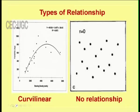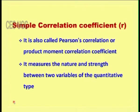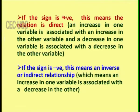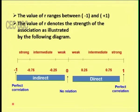Now let us calculate how to find the strength of the correlation. The simple correlation coefficient is also called Pearson's correlation or the product moment correlation. It measures the nature and strength between two quantitative variables. The sign of r denotes the nature of association and the value denotes the strength. A positive sign means a direct relation; a negative sign means an inverse relationship. The value tells the strength: a positive sign with a high value indicates a strong positive correlation.